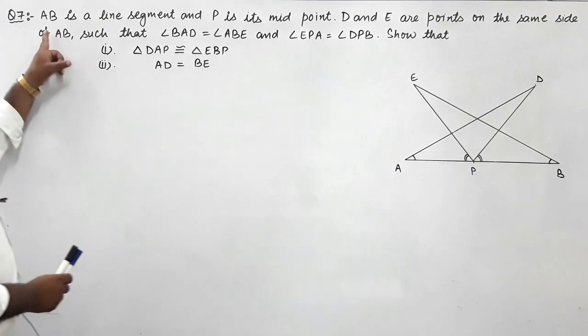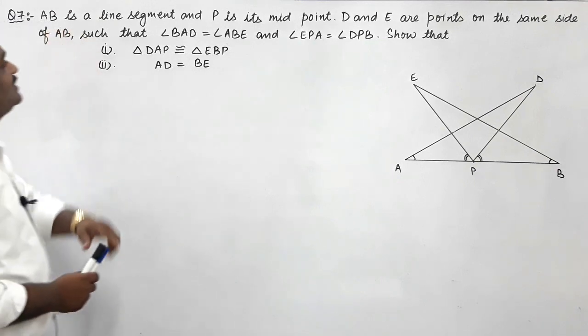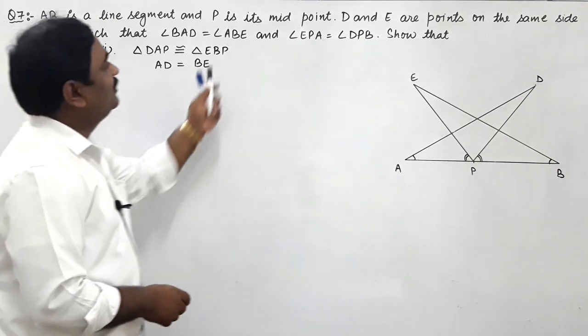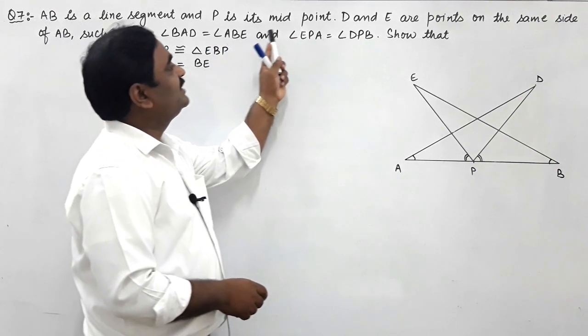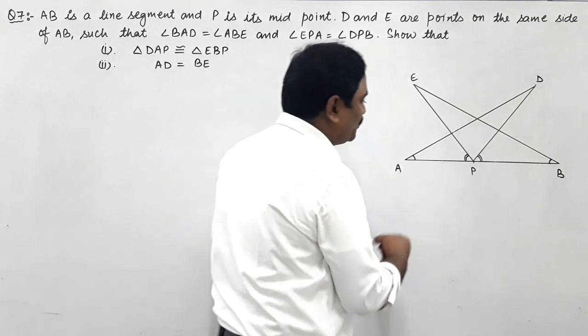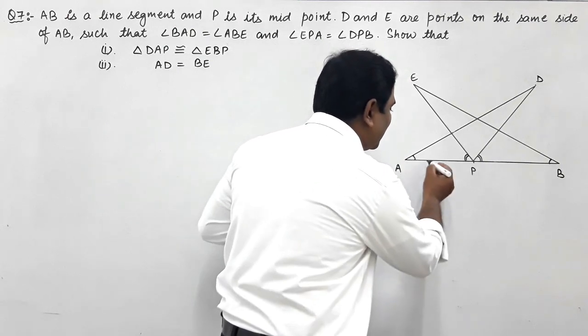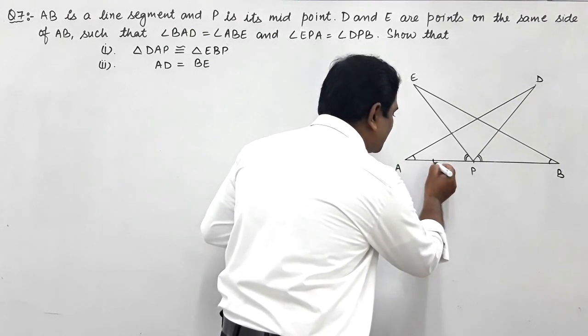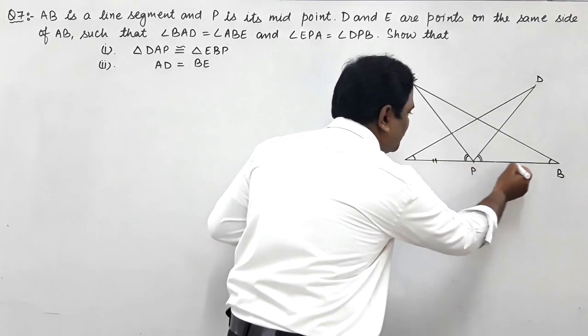In this question, it is given that AB is a line segment and P is its midpoint. P is the midpoint, which means AP is equal to PB.